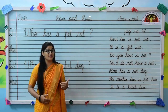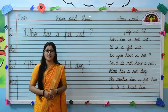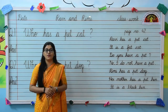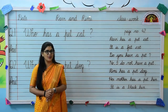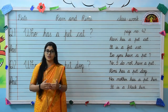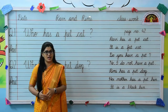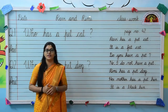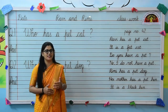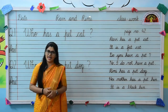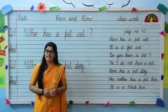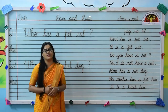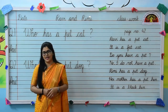Kids, in the previous class, we read page number 42 in your Hollyhoek book, and today we will do question and answer and fill in the blanks related to that. Before starting it, let's read page number 42 again.